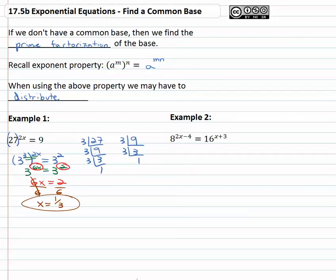Here we've got 8 to the 2x minus 4 equals 16 to the x plus 3. Let's rewrite this, hopefully we'll get the same base if we do the prime factorization trick. Well, 8 divided by 2 is 4, 4 divided by 2 is 2, and 2 divided by 2 is 1.